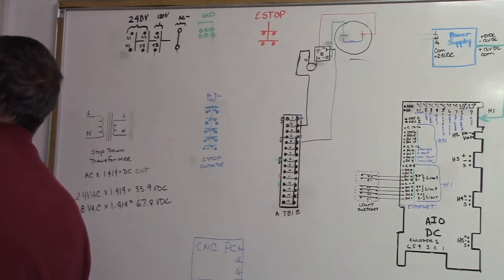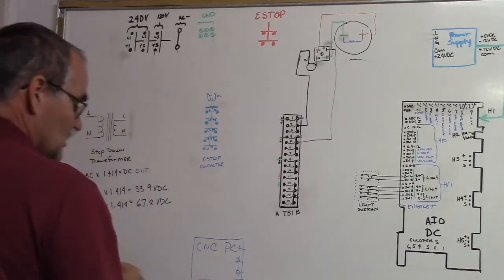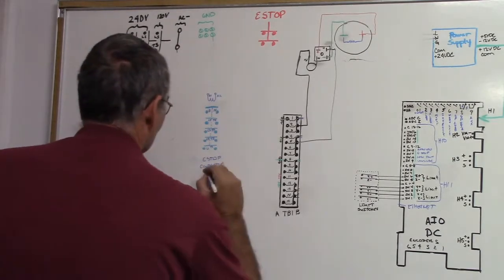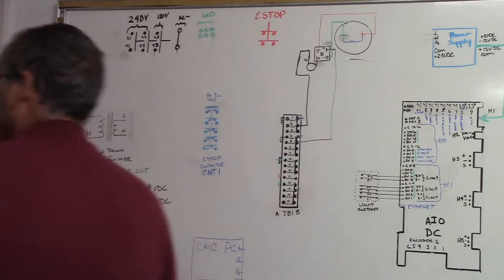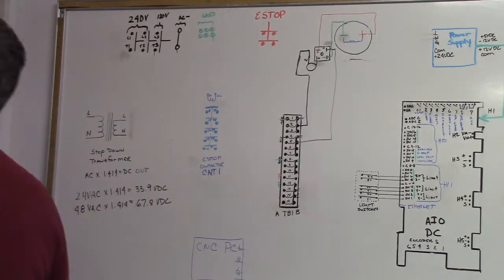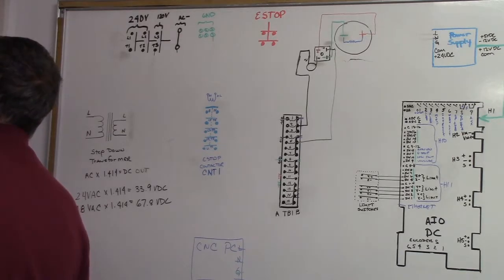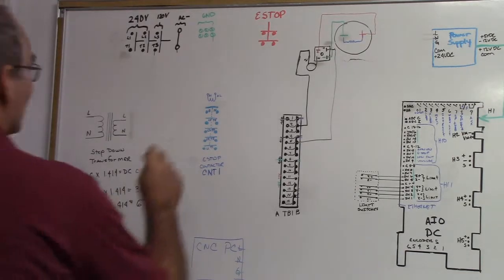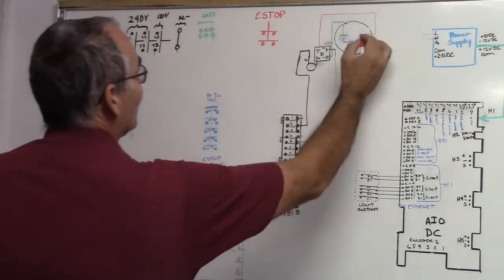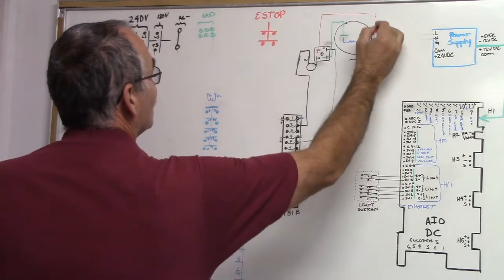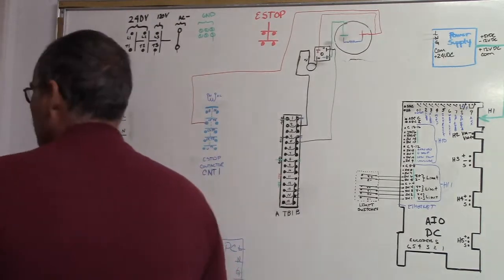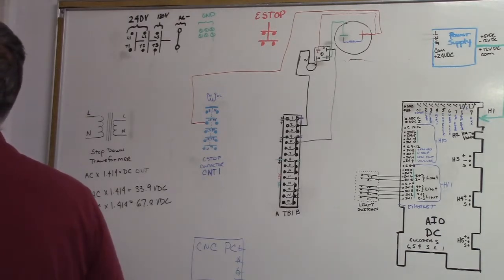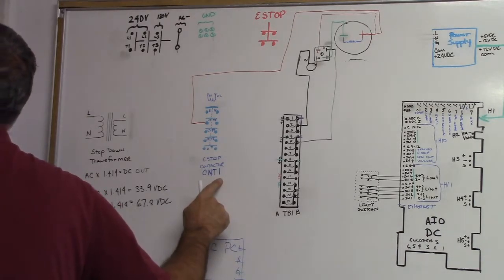And the next stop is, our positive goes to CNT1. CNT1 is the e-stop contactor. CNT's contactor. So this is CNT1. That's the way it is on the print. So we're going to CNT1 with our positive L4. We're going to be here with our positive.